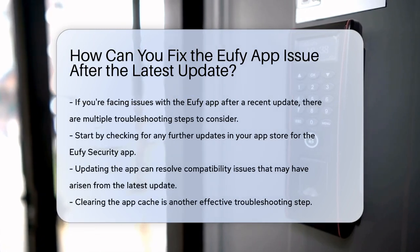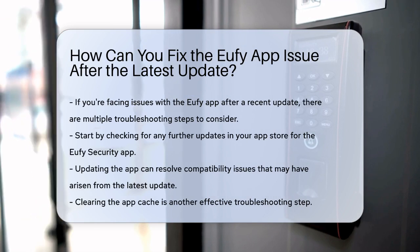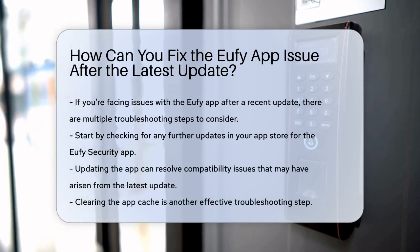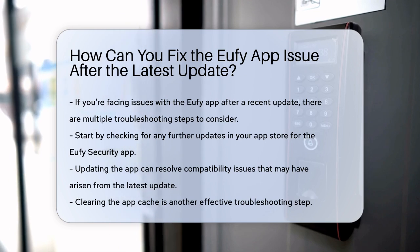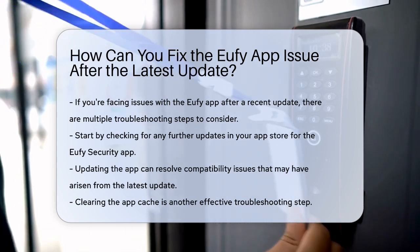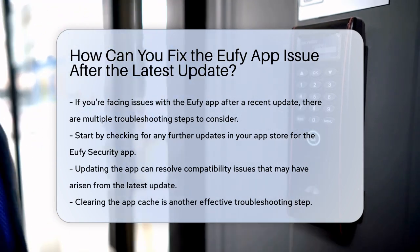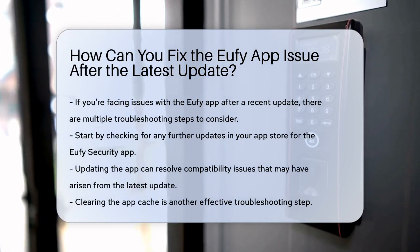First, let's talk about updating the app. Sometimes the latest update might not be fully compatible with your device, but checking for another update can help. Open your App Store, search for the Eufy Security app, and see if there is an update available. Click on the Update option and wait for the process to complete. This might fix the problem if it was due to a temporary glitch.